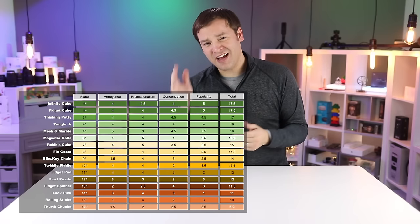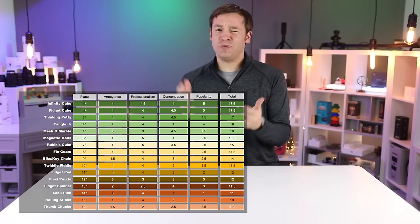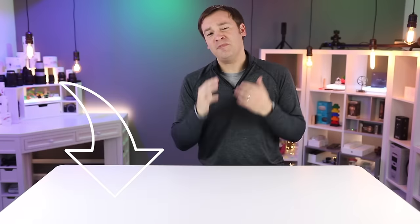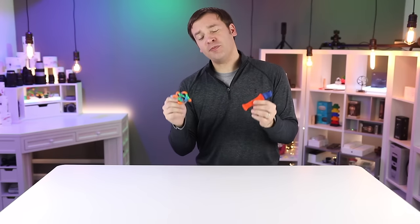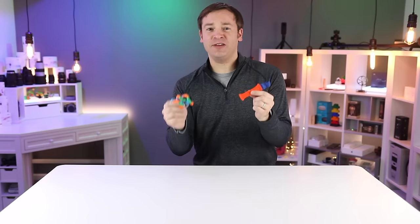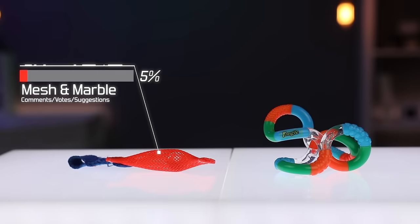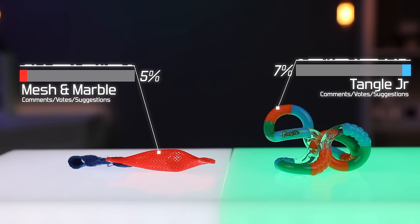Now to sort out the ties based on the comments from the previous video, and this would be a great time for you to comment below and let me know what is your favorite fidget toy for the office as well. Tied for fourth place is the mesh and marble and Tangle Jr. With 4.6% of the votes and 7.1% of the votes, the Tangle Jr. gets the fourth spot.